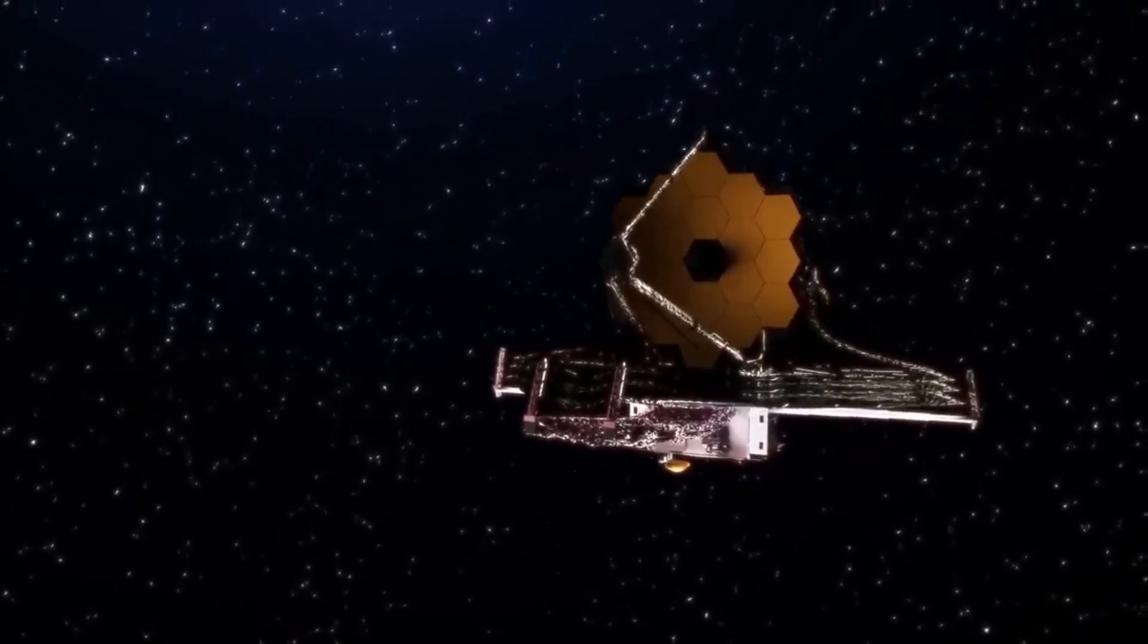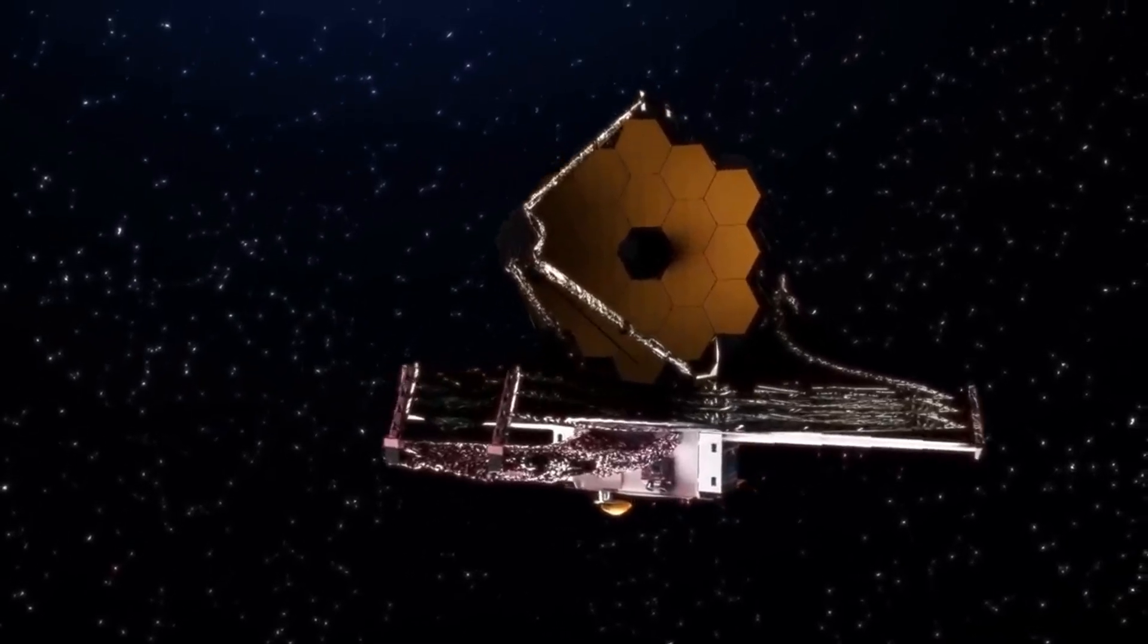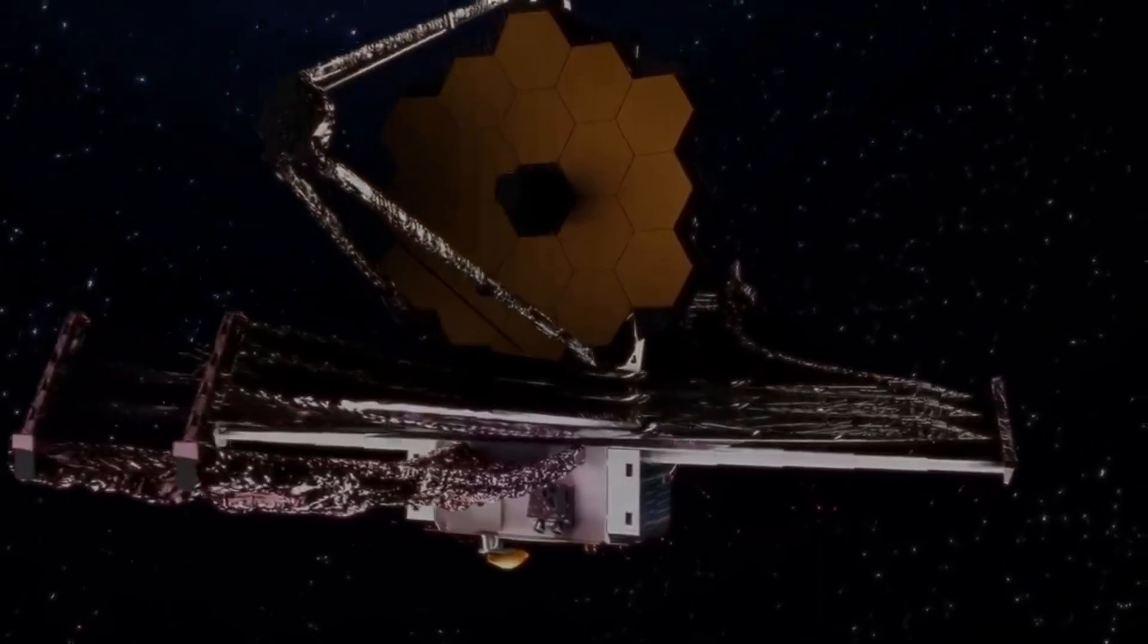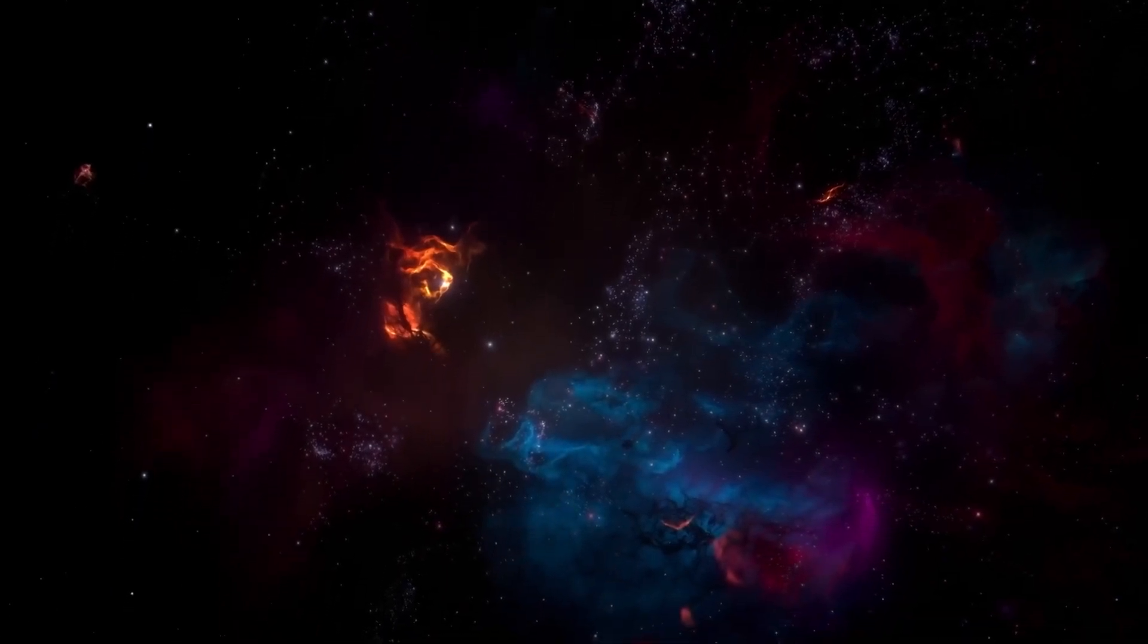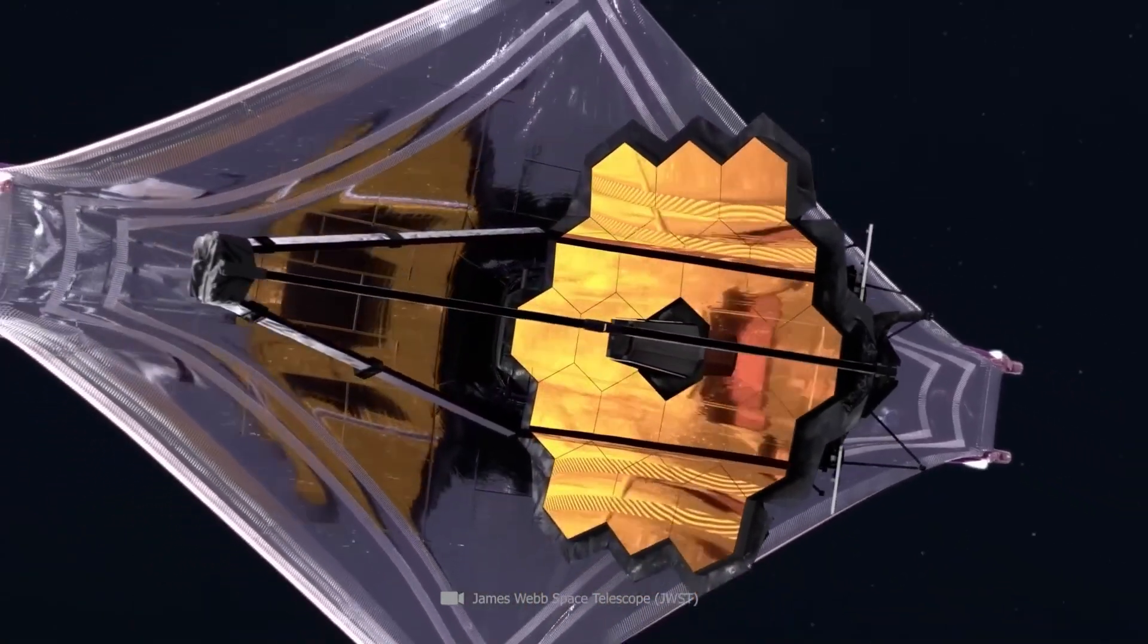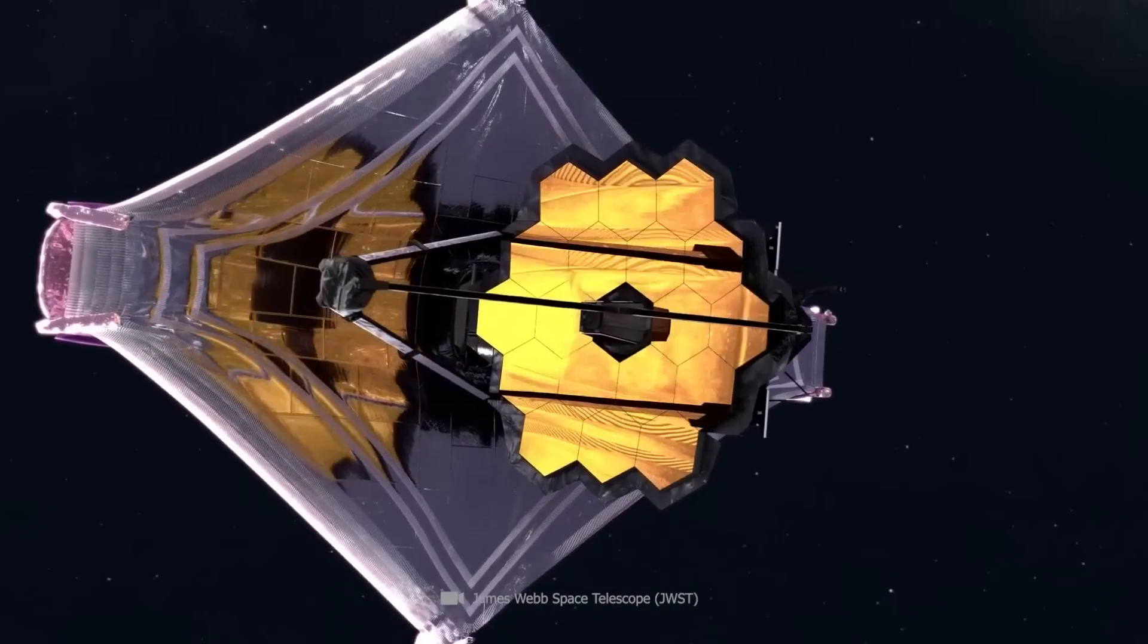In other words, the fact that James Webb saw so many galaxies with these properties so early on is puzzling, so we're wondering, do we really understand the early phases of the formation of these galaxies? And this truly has posed a lot of questions for the theorists.